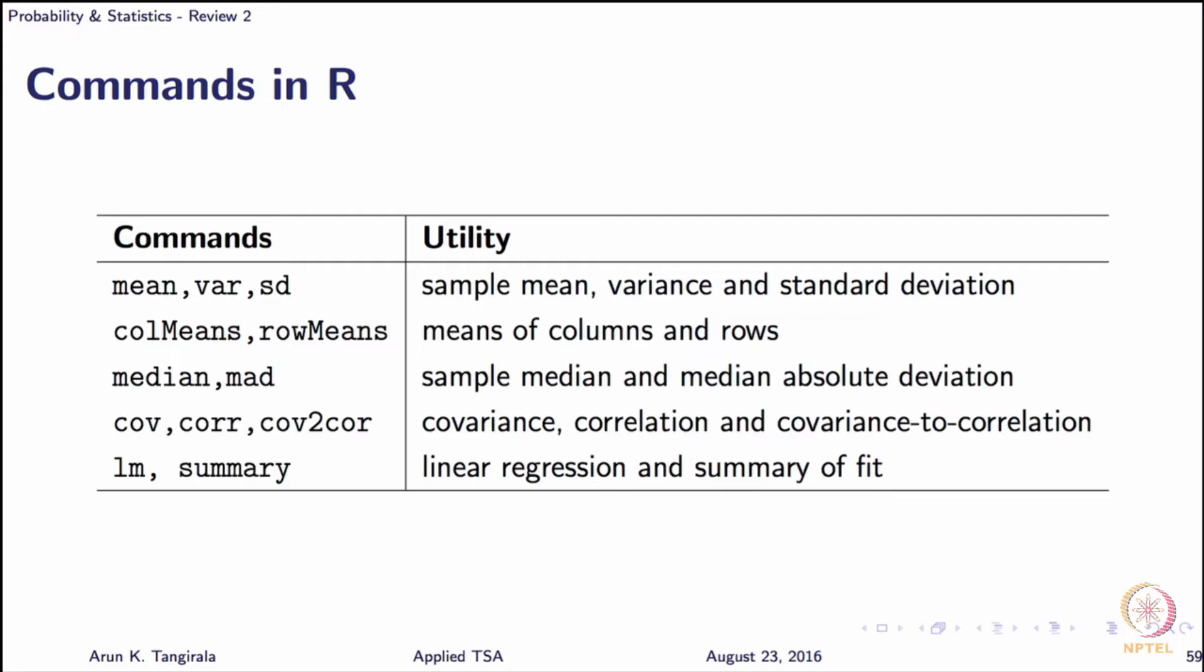And then you have median and MAD. Yeah it is mad, but let us read it as MAD. MAD stands for median absolute deviation. Now median is a robust measure or a robust estimate of the mean, it is still an estimate, only computes an estimate. There is a theoretical definition of median, we know what it is.